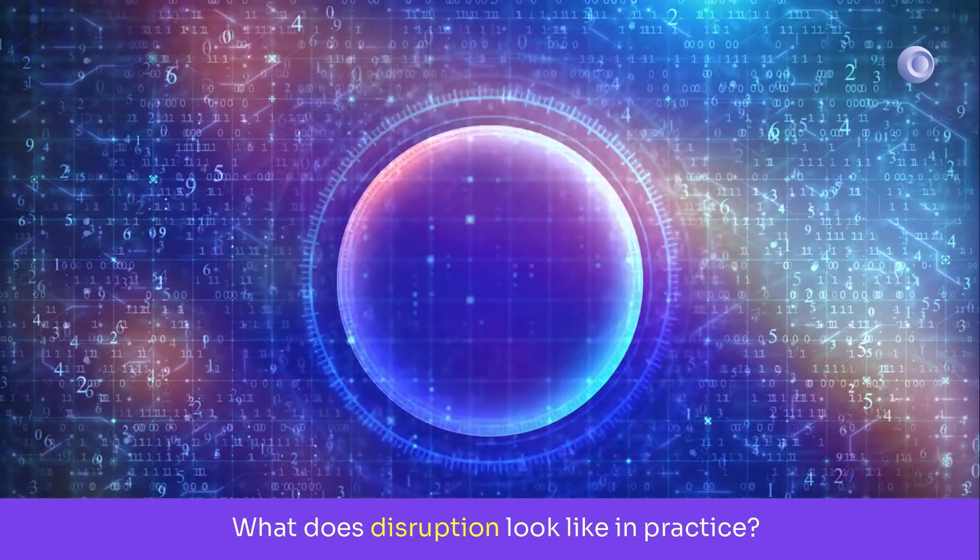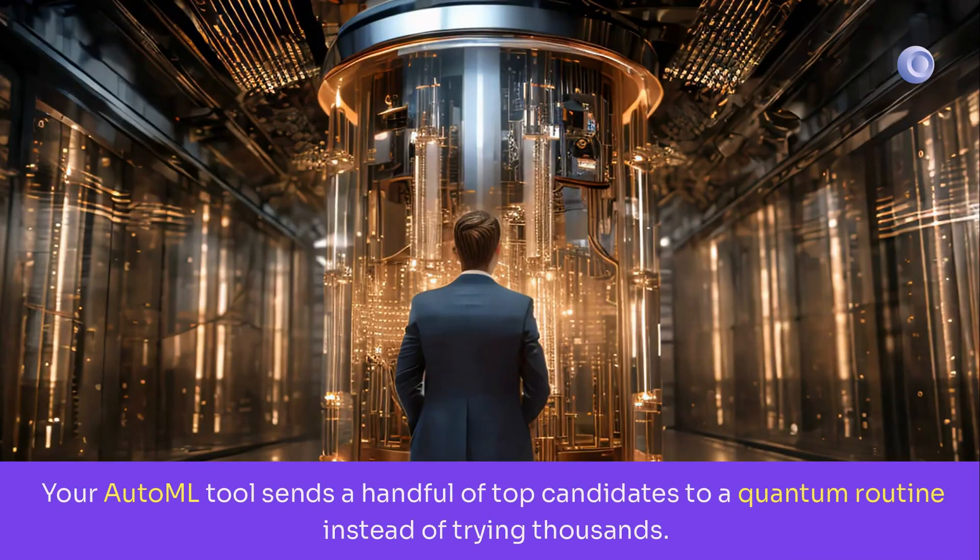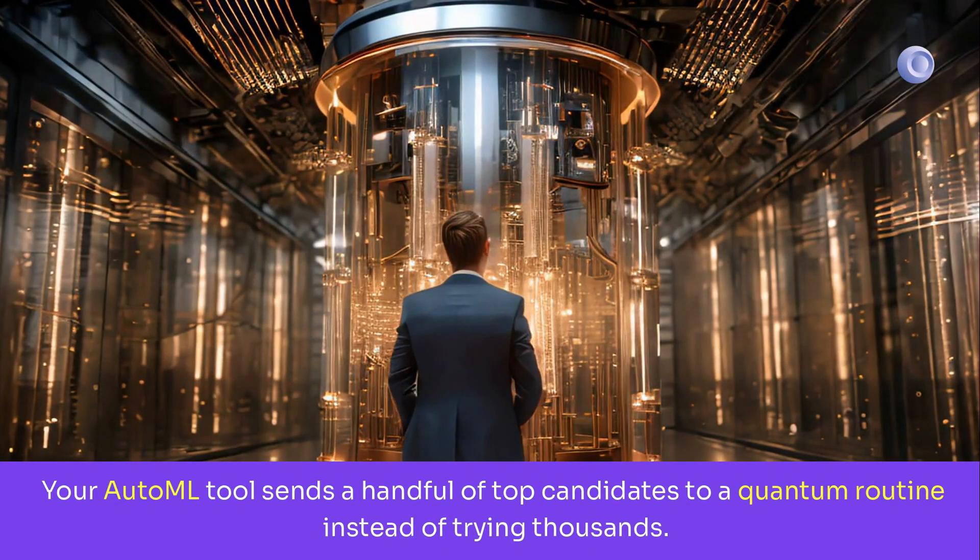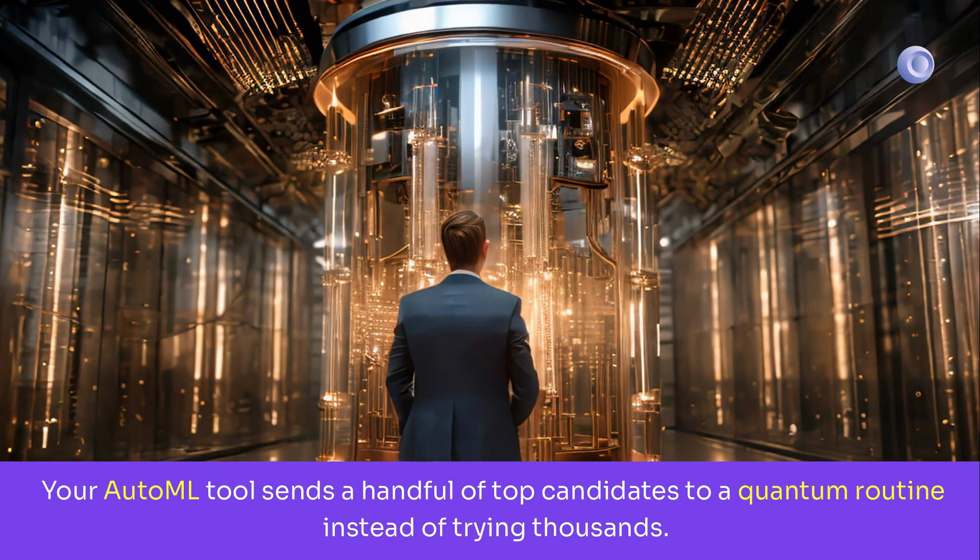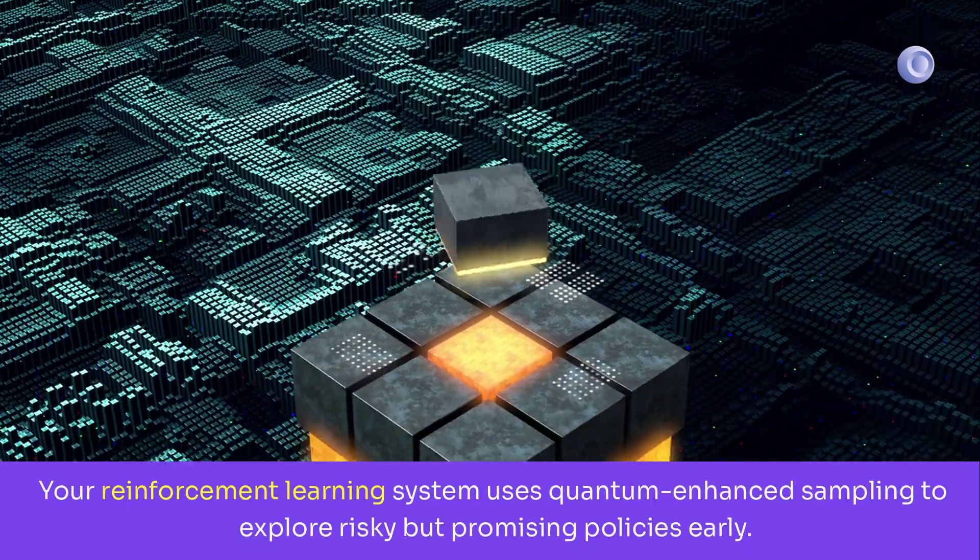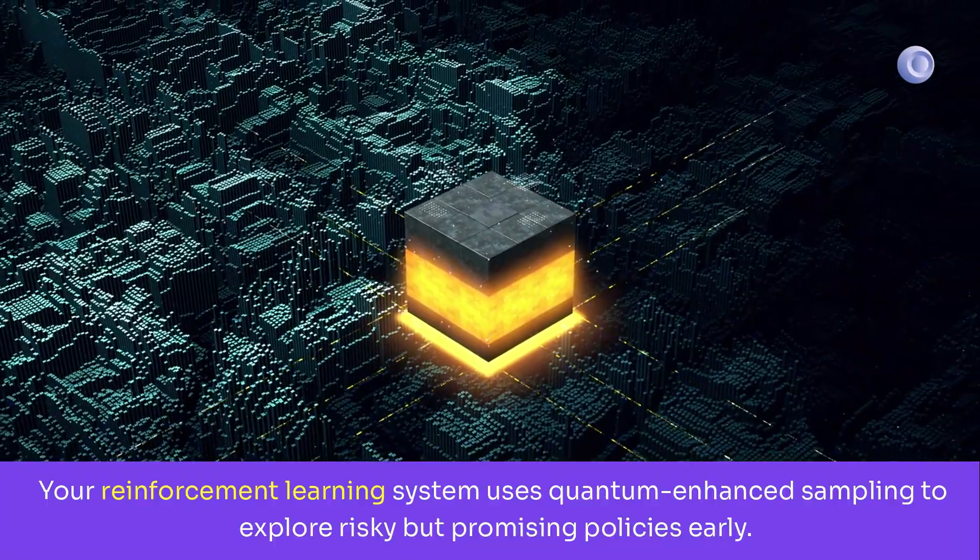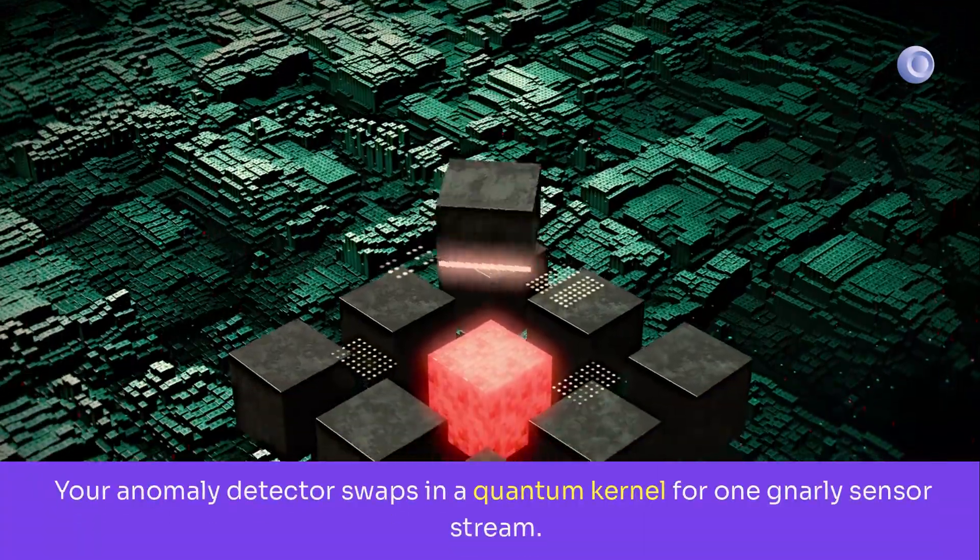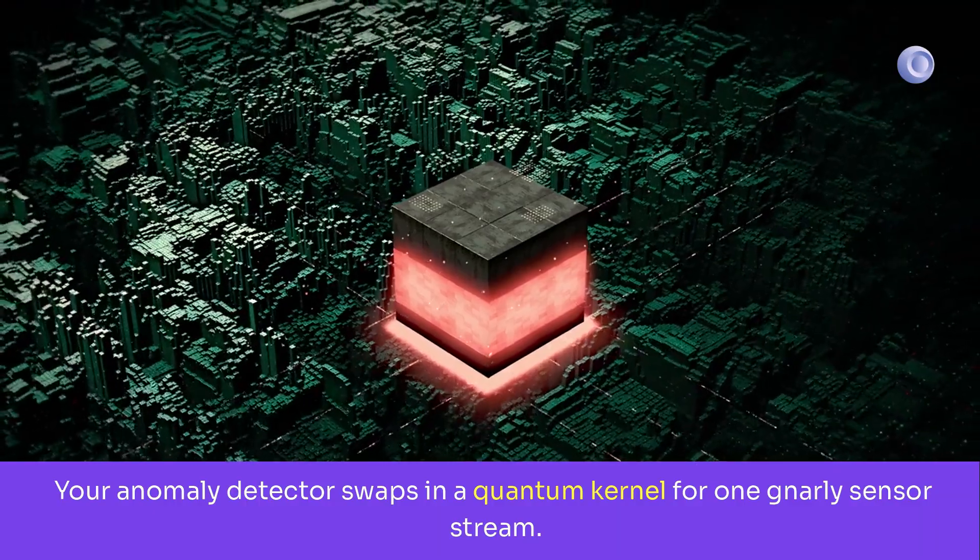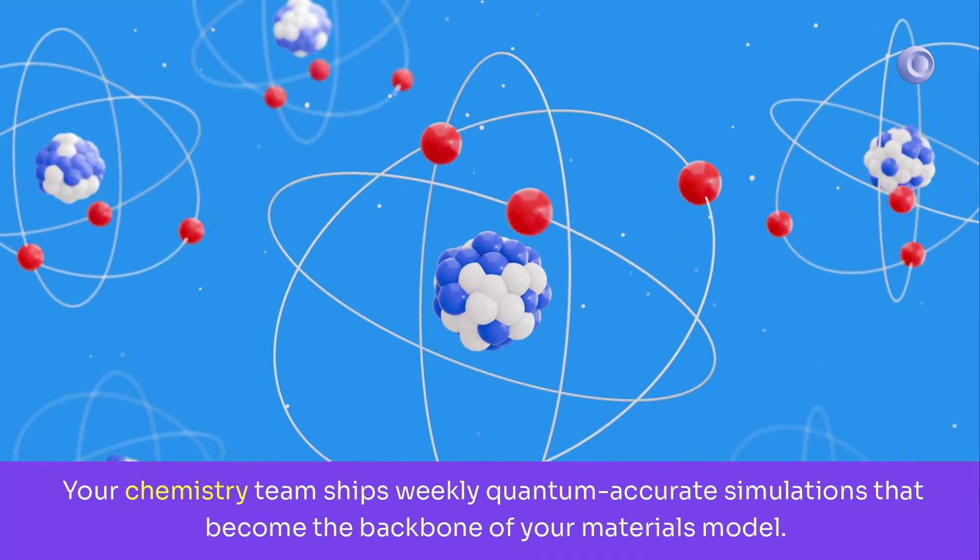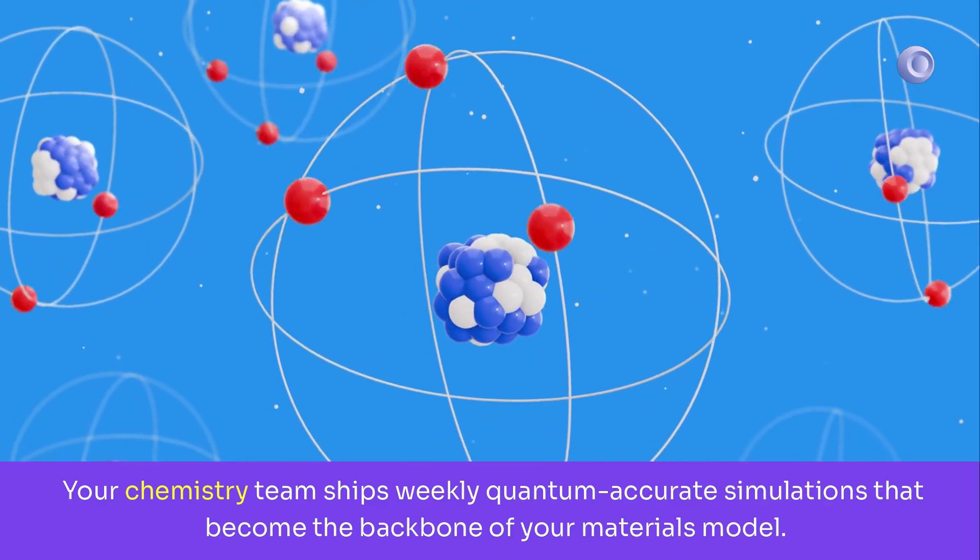What does disruption look like in practice? Your AutoML tool sends a handful of top candidates to a quantum routine instead of trying thousands. Your reinforcement learning system uses quantum enhanced sampling to explore risky but promising policies early. Your anomaly detector swaps in a quantum kernel for one gnarly sensor stream. Your chemistry team ships weekly quantum-accurate simulations that become the backbone of your materials model.